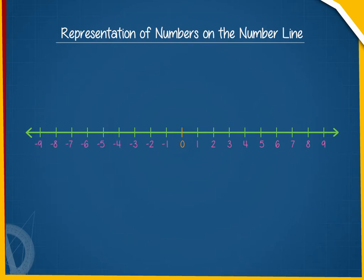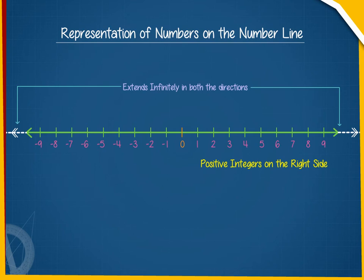This is a line that extends infinitely in both the directions with the number 0 in the middle. The positive integers 1, 2, 3, 4 and so on are on the right side while the negative integers minus 1, minus 2, minus 3, minus 4 and so on are on the left side. The numbers marked on this number line are called integers.